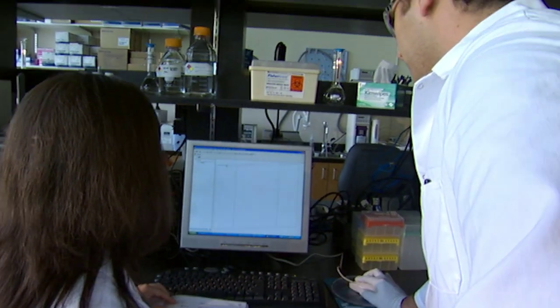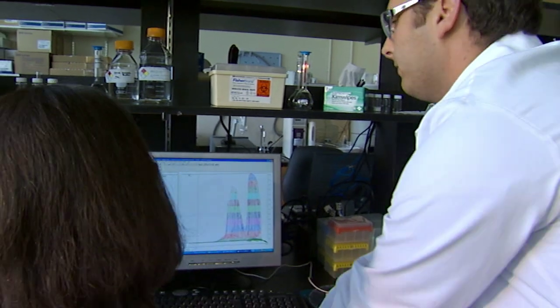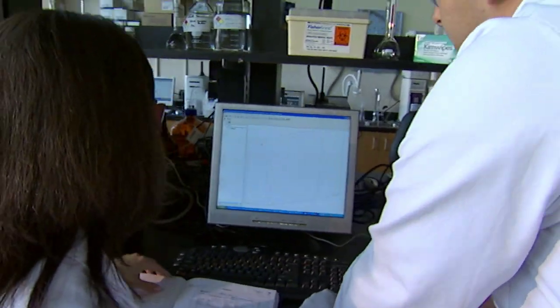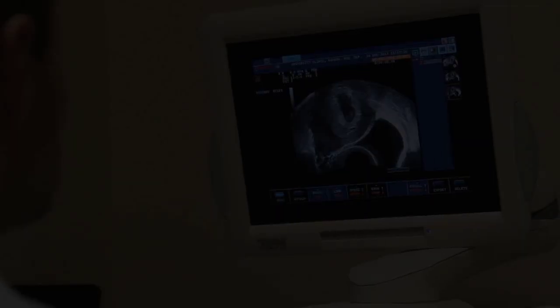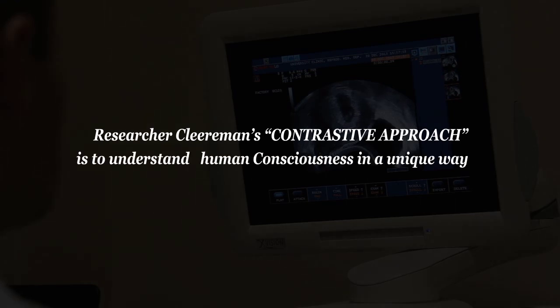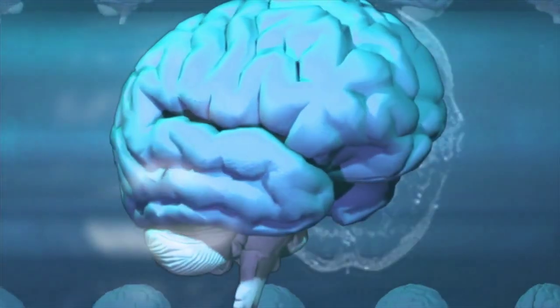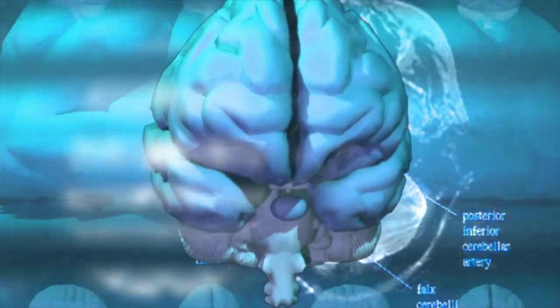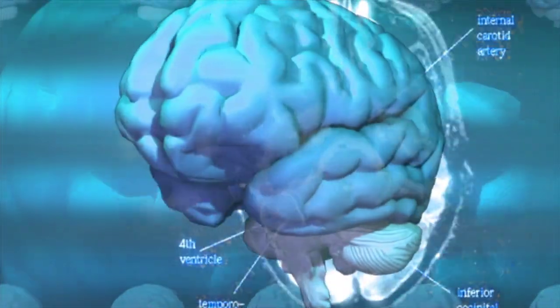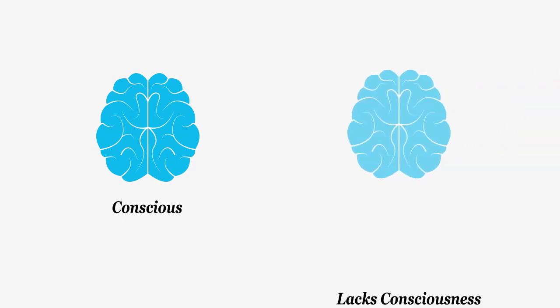Many scientists have unique approaches in defining and analyzing consciousness. One approach is researcher Clearman's contrastive approach. His idea is to understand consciousness by comparing two states of the brain. In one state, the brain is conscious and in the other, it lacks consciousness.